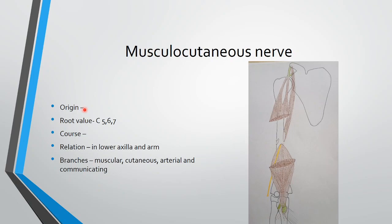The musculocutaneous nerve takes origin from the lateral cord of the brachial plexus. Its root value is C5, C6, C7. It passes from the lower part of the axilla along with the third part of the axillary artery.